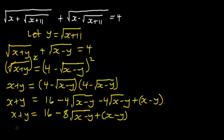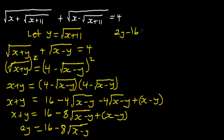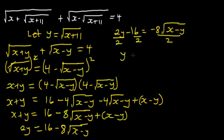When we do that, X minus X gives zero, and we collect the Y terms to get 2Y, so 2Y equals 16 minus 8 root of X minus Y. Bringing the 16 over gives 2Y minus 16 equals minus 8 root of X minus Y. Dividing the entire equation by 2 gives Y minus 8 equals minus 4 root of X minus Y.